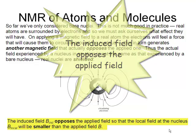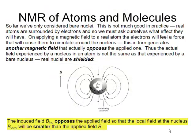So the field that our nucleus sees is the summation of the applied field and the induced field. So the nucleus is going to see a magnetic field which is smaller than the field that we've applied to it.